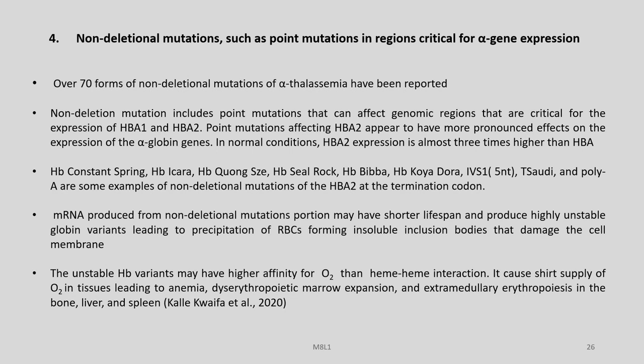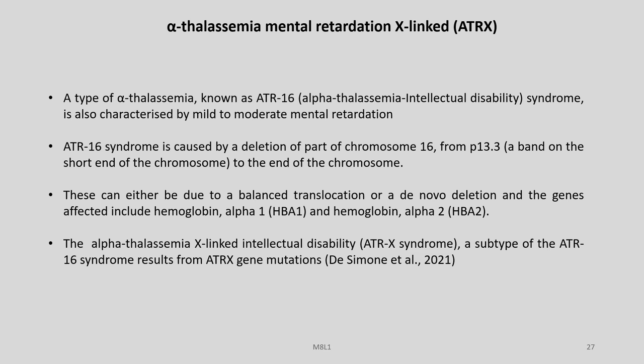Unstable HB variants may have higher affinity for oxygen than normal hemoglobin interaction, causing a short supply of oxygen to tissues leading to anemia and several other problems in bone, liver, and spleen. A type of alpha thalassemia known as ATR16, alpha thalassemia intellectual disability syndrome, is also characterized by mild to moderate mental retardation, also known as alpha thalassemia mental retardation X-linked or ATRX.